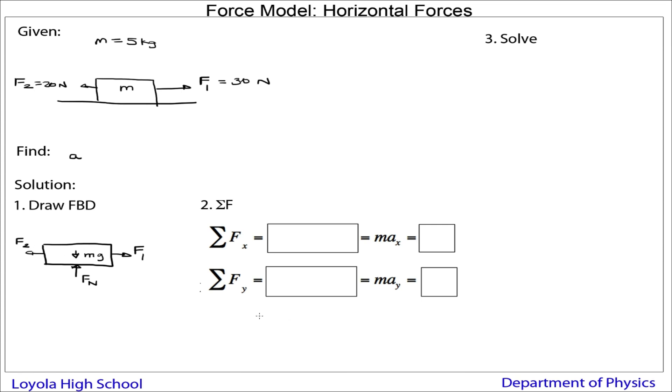So once we have drawn the free body diagram, we have our template. Sum of the forces, I'll say the x direction positive is to the right, and I'll say up is positive. In this diagram, I have two forces that point in the x direction, F1 and F2. Since F1 points in the positive direction, that's going to be a positive F1, and F2 is going to be negative. In this case, there's going to be an acceleration, so it's not zero. There will be an acceleration. So this is not zero.